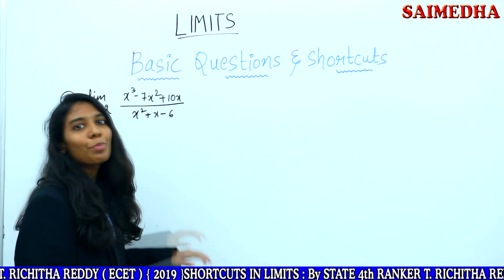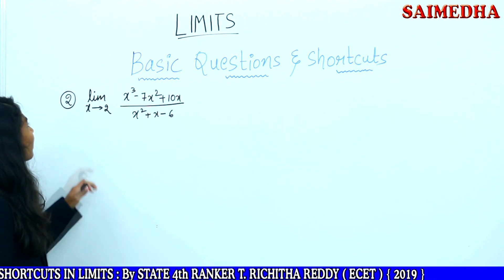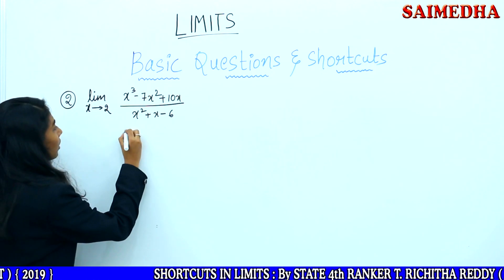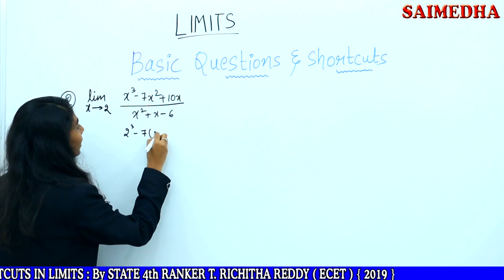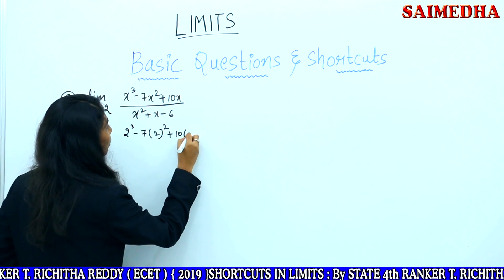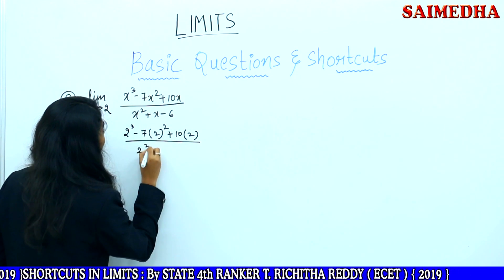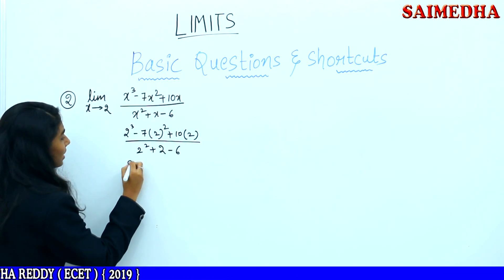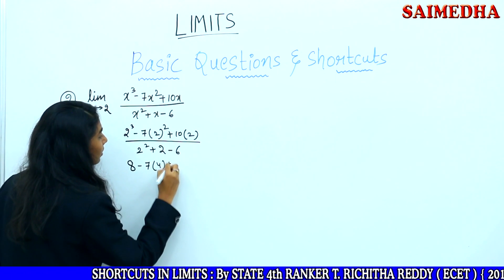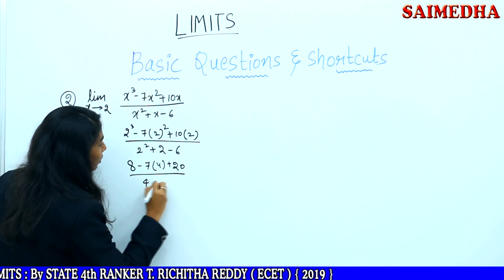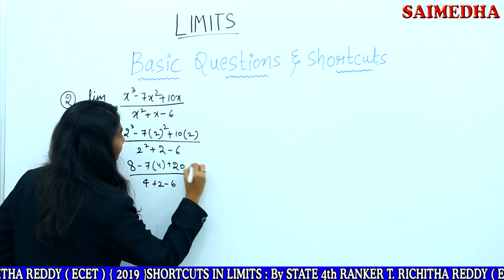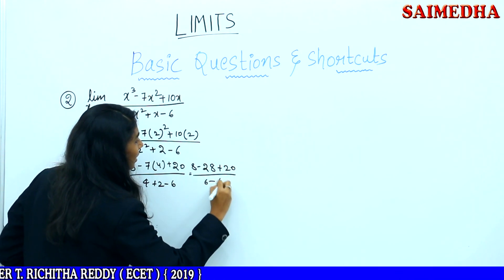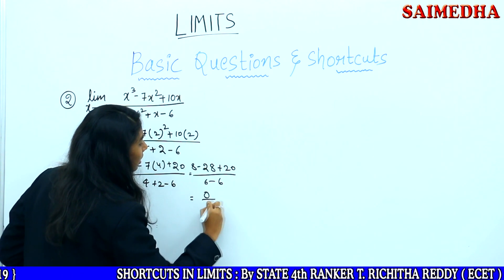Let us see problem number 2. Here, limit x tends to 2. Substitute 2 in the value of x: 2 cubed minus 7 into 2 squared plus 10 into 2, by 2 squared plus 2 minus 6. 2 cubed is 8, minus 7 into 4 plus 20, by 4 plus 2 minus 6, which equals 8 minus 28 plus 20 by 6 minus 6.